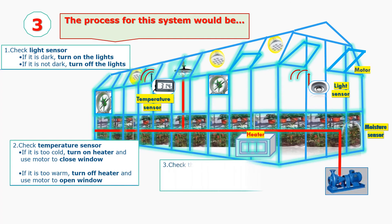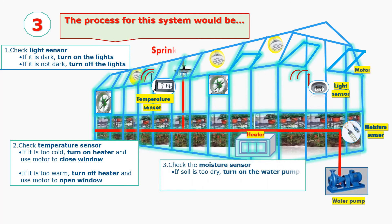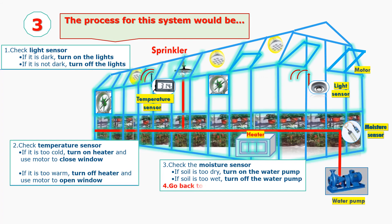Third, check the moisture sensor — if the soil is too dry, turn on the water pump; if the soil is too wet, turn off the water pump. The process is then repeated, starting back at the first step and continuing in a loop.